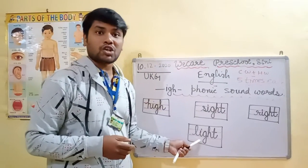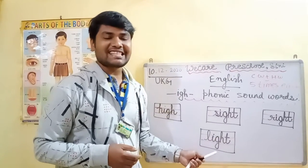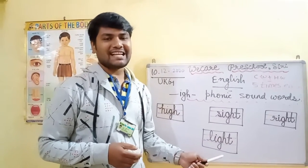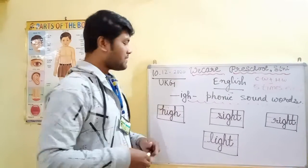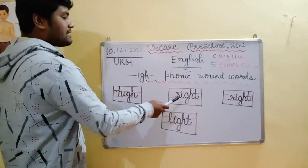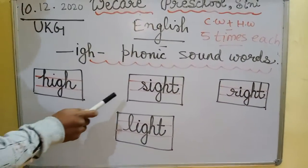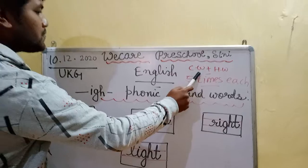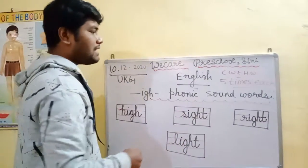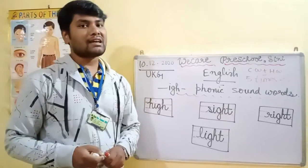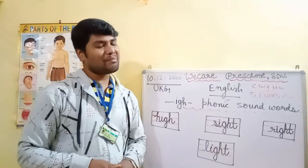Okay — Roshni. Light ka matlab roshni. The sun gives us light — Suraj haame roshni deta hai. Okay, HIGH, SIGHT, RIGHT, and LIGHT — har ek word ko aap five times likhiye apne class notebook mein. Parents, acheese full word ki box bana denge, aur bachche writing practice karenge, spellings learn karenge. Goodbye kids — Happy learning!